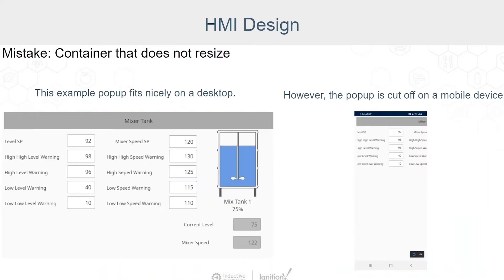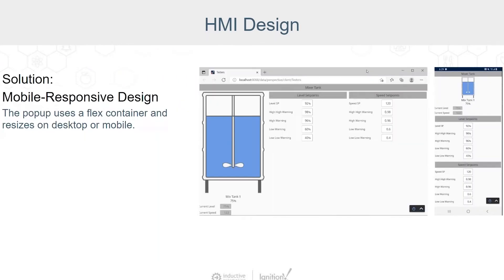Our first mistake is not considering mobile responsive design. We have a coordinate container that fits very nicely on a desktop, but it's not resizable, and on a mobile screen it's cut off. Clearly mobile responsiveness was not considered at design time. The solution is using a mobile responsive designer. This Perspective view uses a flex container and it's going to resize nicely on a desktop or mobile.